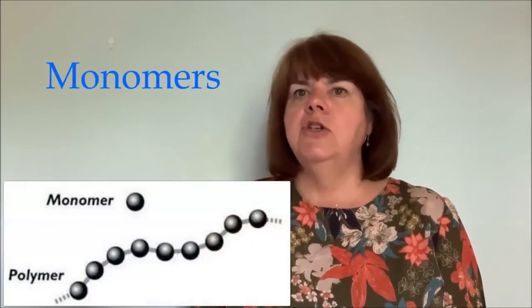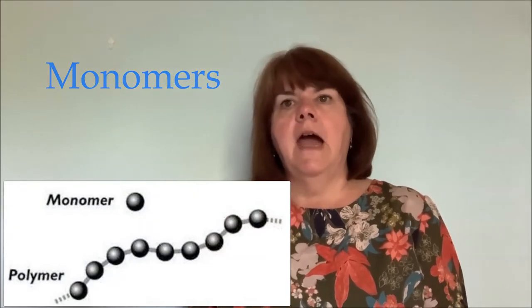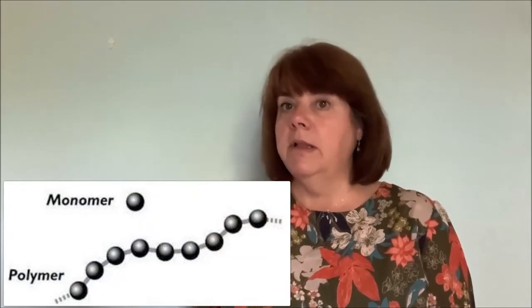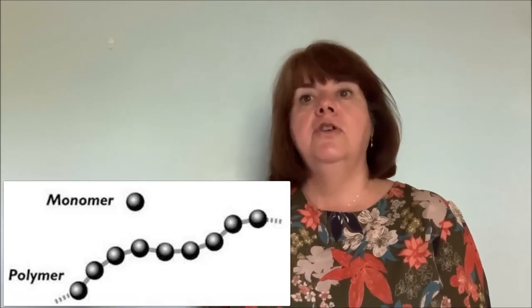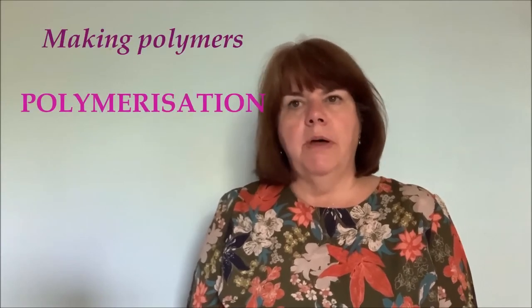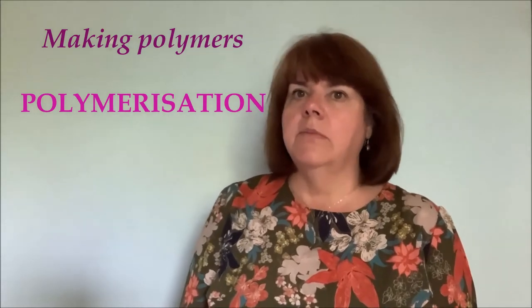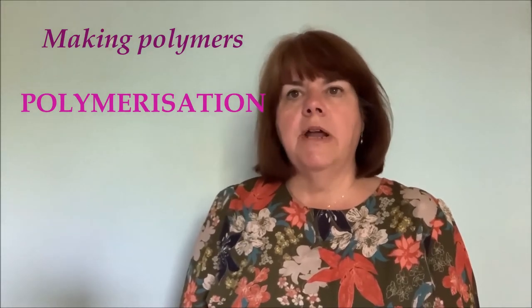Let's think some more about polymers. Polymers are formed by chemical reactions, in which many molecules are joined together sequentially to form a chain. Monomers are the simple compounds whose molecules bond together to form the polymers. In many polymers, only one type of monomer is used. In others, two or three different monomers may be combined.